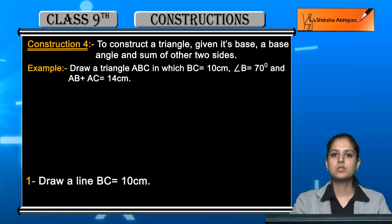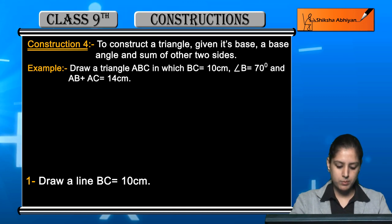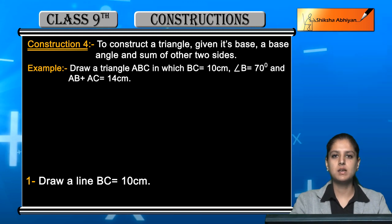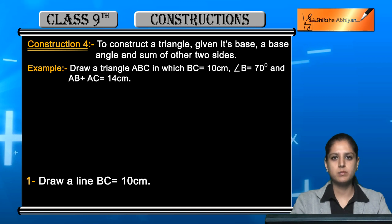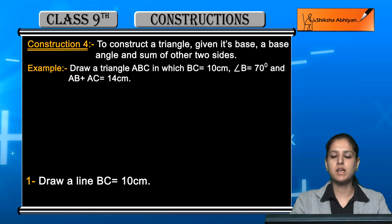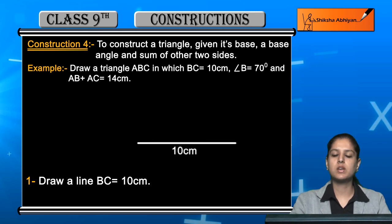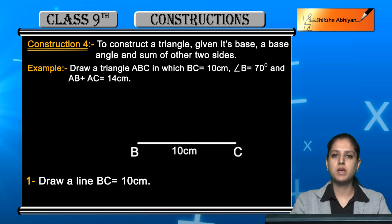The first step is to draw the base BC. So Step 1: draw a line BC equal to 10 centimeters. We will use a scale and pencil to draw a line of 10 cm. We write one end as B and the other end as C.